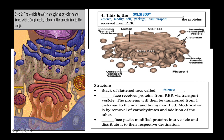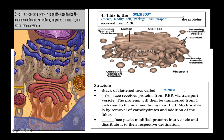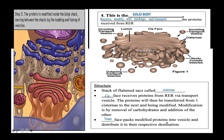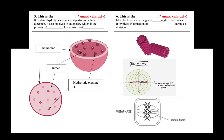The proteins are transferred from one cisterna to the next and modified by removal of carbohydrates and addition of other carbohydrates. The trans face packs modified proteins into vesicles and distributes them to their respective destinations. An example of protein processed by the Golgi body includes the hydrolytic enzyme that makes up the lysosome. The lysosome performs cellular digestion resulting from phagocytosis, and is also involved in autophagy — the digestion of old and worn-out organelles. The vesicle contains hydrolytic enzymes and is known as the lysosome. It is important to note that lysosomes can only be found in animal cells.